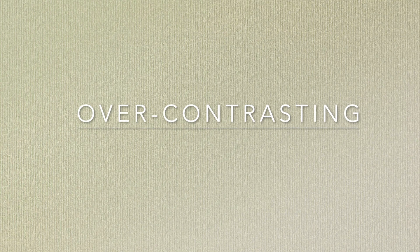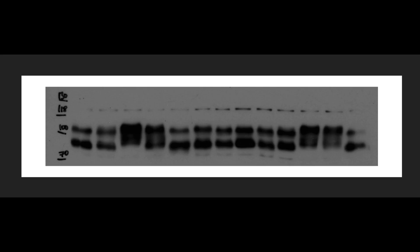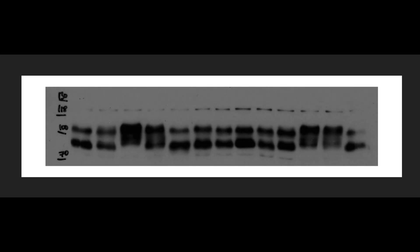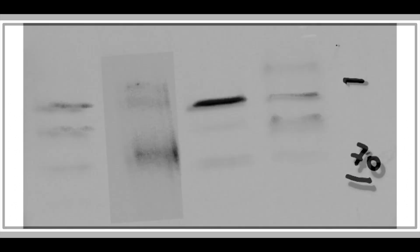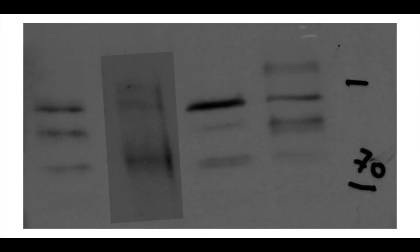A frequently encountered problem associated with immunoblots and gels is over-contrasting. Adjusting the contrast in moderation is acceptable if it is applied equally across the entire image and equally to controls. However, the contrast should not be adjusted to an extent where data disappear. Background noise should always remain visible and not be wiped out. Take note that over-contrasting can also be used to hide a number of inappropriate data alterations, such as splice marks or dropping in of elements.